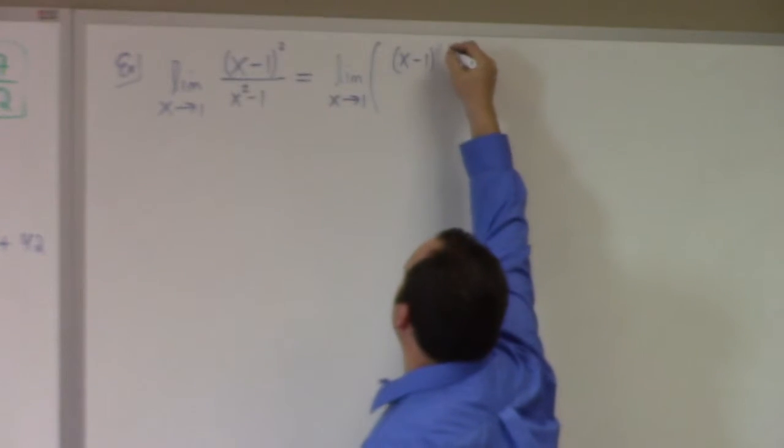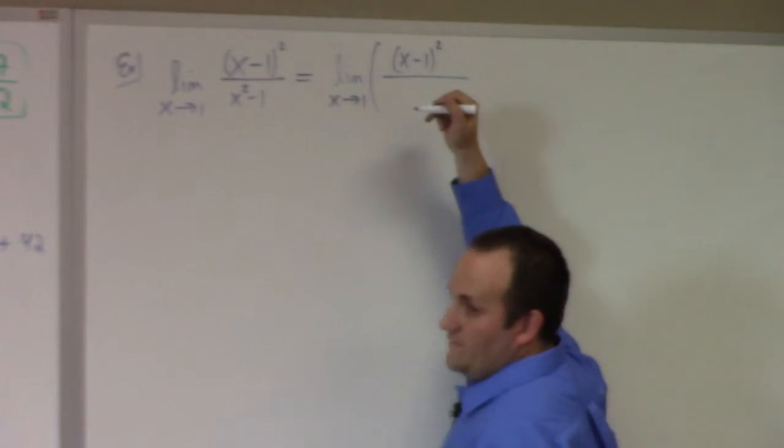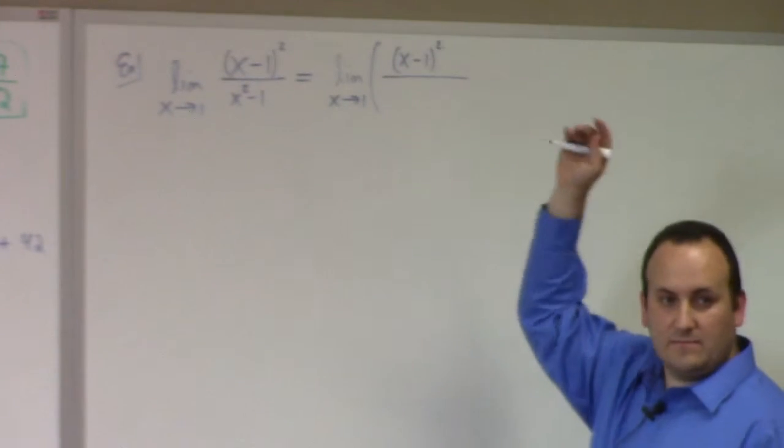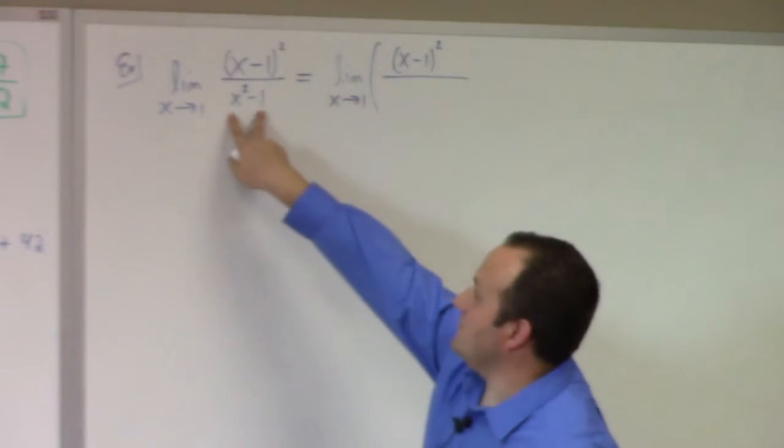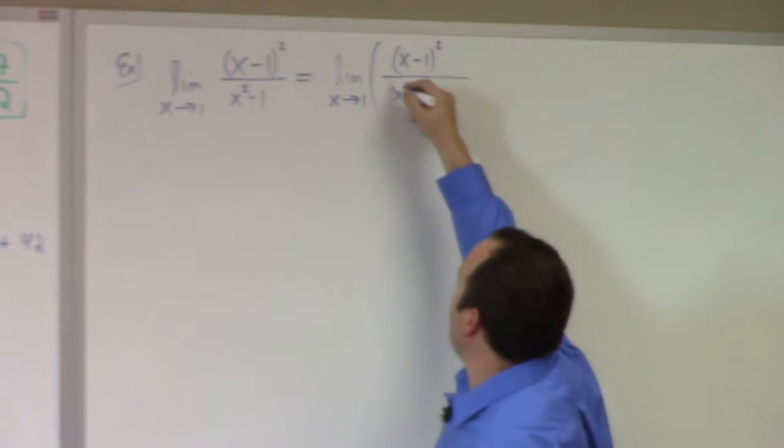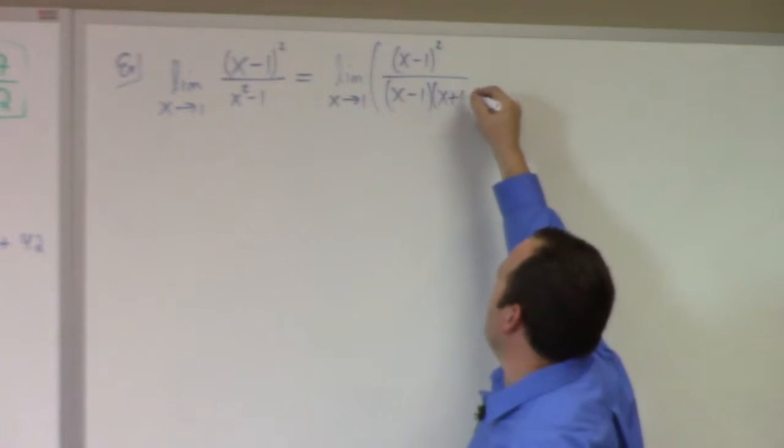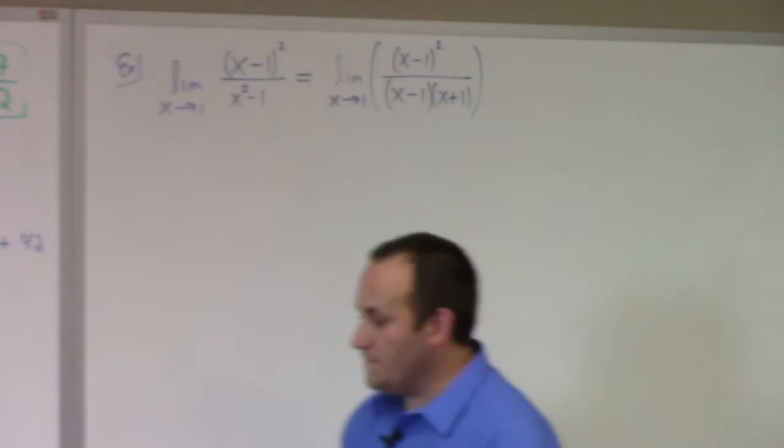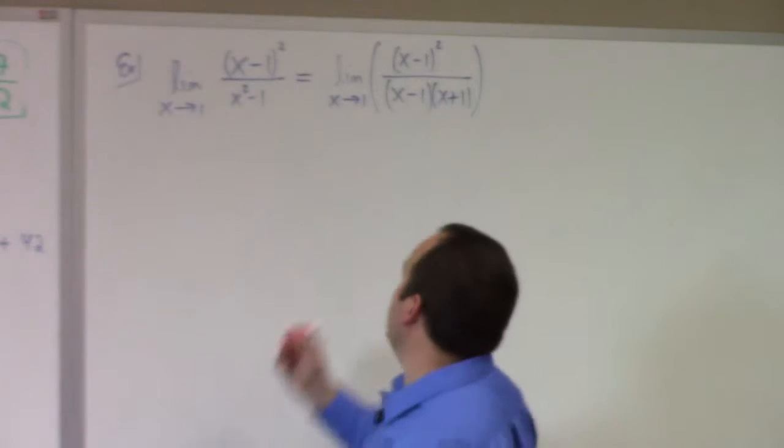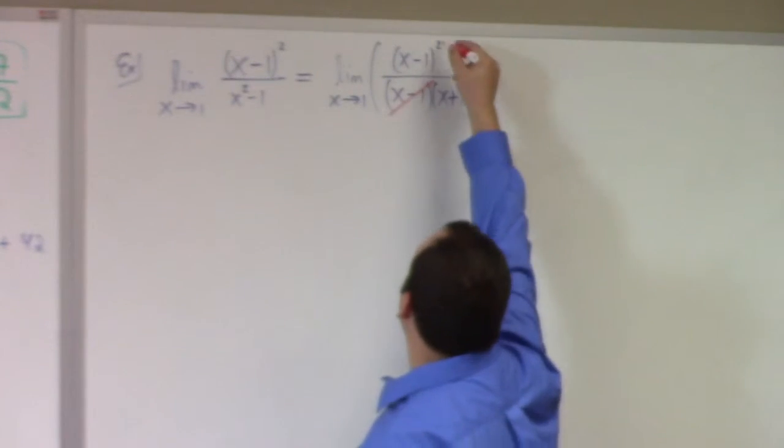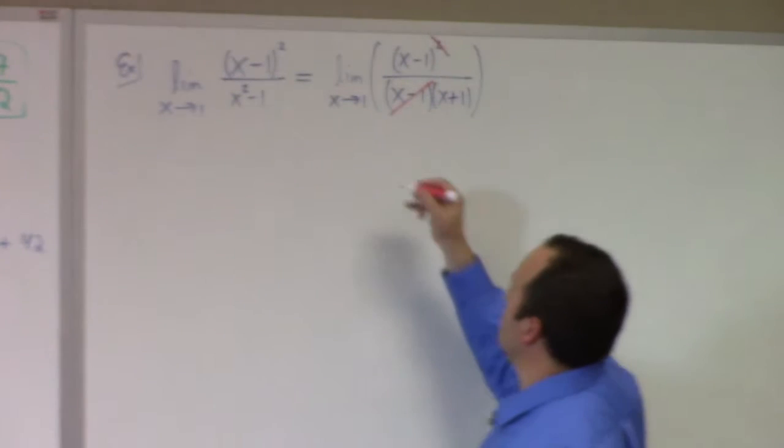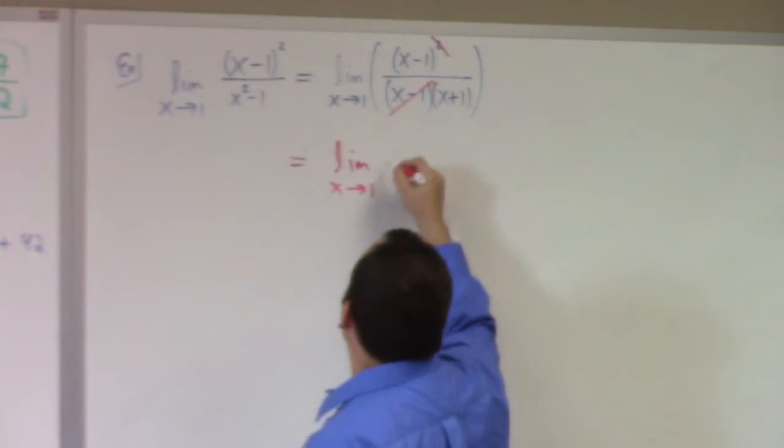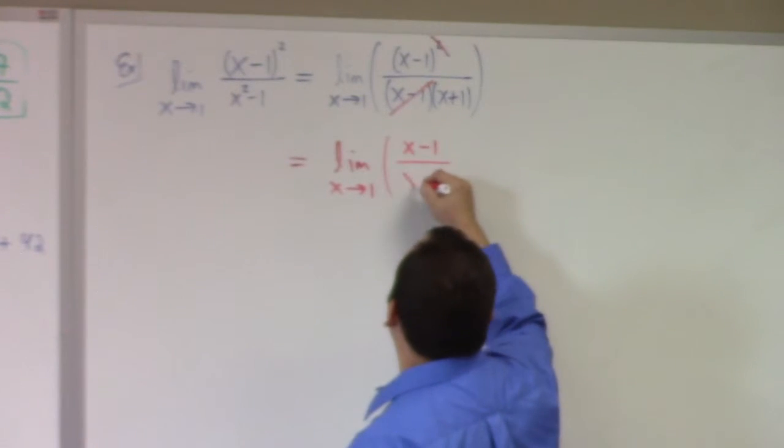So I have x minus one squared. Don't foil it out. For the reasons the lady in the front row pointed out, leave it because we might be able to cancel it. In fact, we can because this is x minus one times x plus one. So we have like terms. We can reduce that. And so what we're left with is the limit as x approaches one of x minus one divided by x plus one.